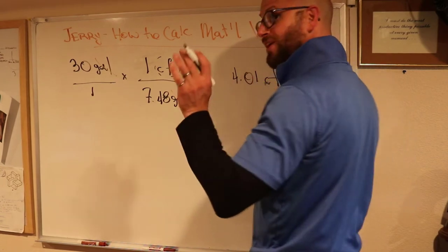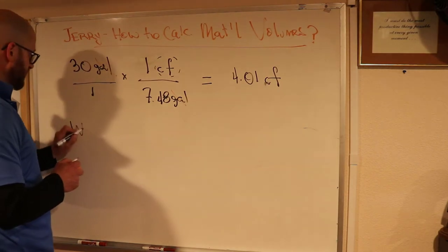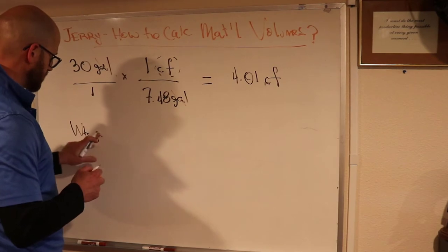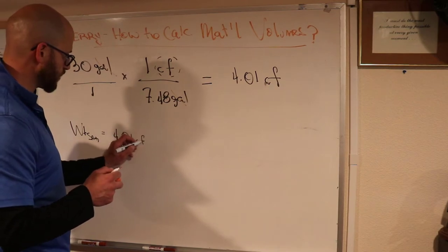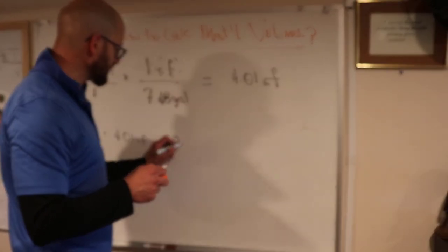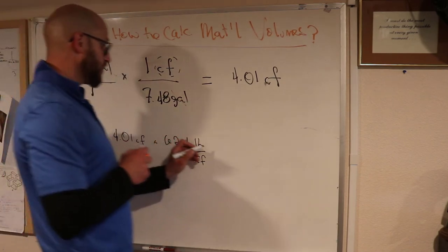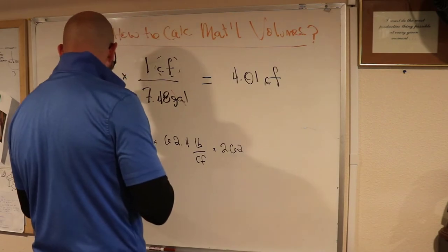Now we know we're gonna go for our weight of sand. We're gonna take our cubic feet, so we now have 4.01 cubic feet times our unit weight of water, 62.4 pounds per cubic foot. Then we're gonna multiply that by the specific gravity of our soil, which we're gonna assume is 2.62.